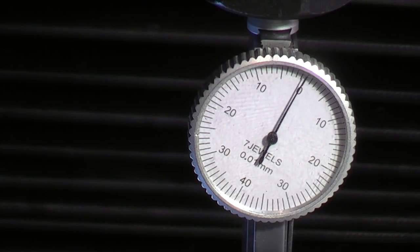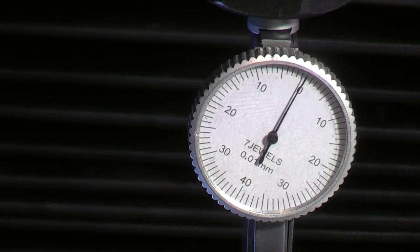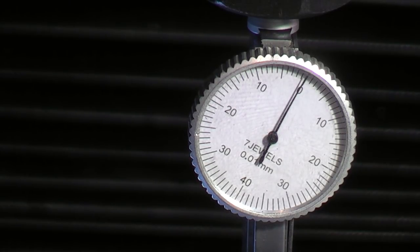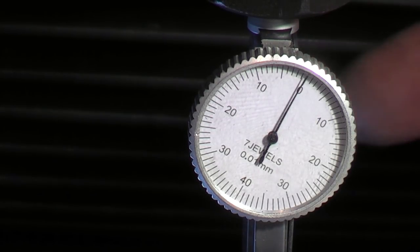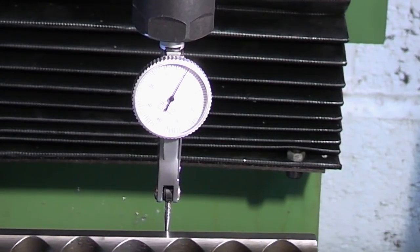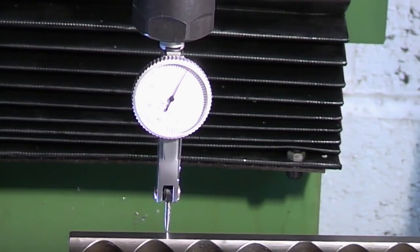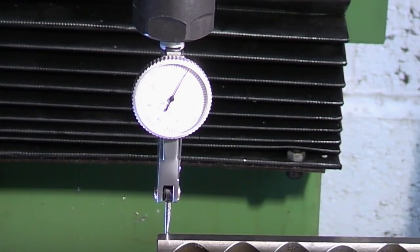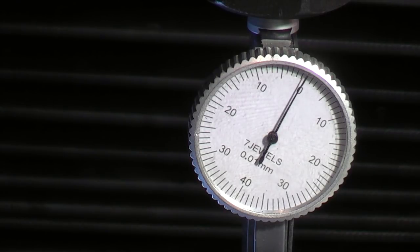I think that's the nearest I can get that. But don't forget that's one tenth of a thou over six inches. So by using the parallel strip in the vise and clocking up on the side where the vise jaw is fixed, you're extending the measurement range. And the longer the parallel strip the more accurate you can get your vise set up square.